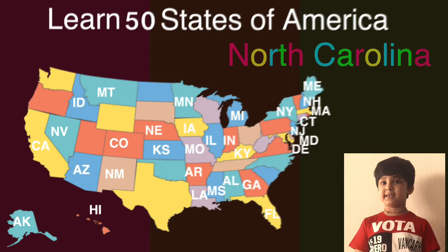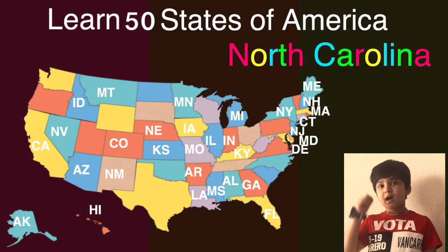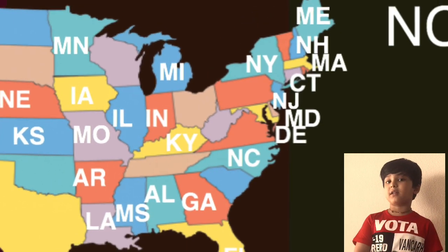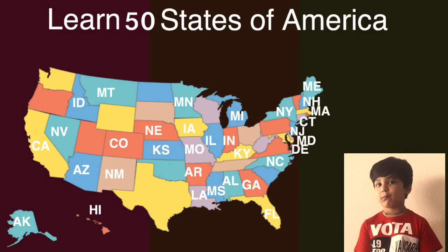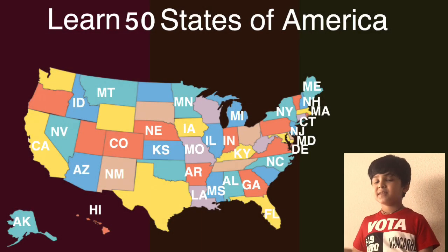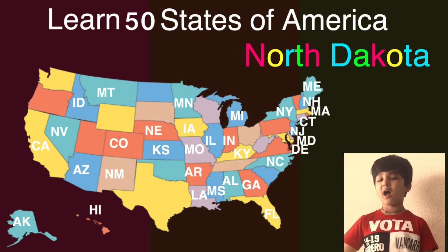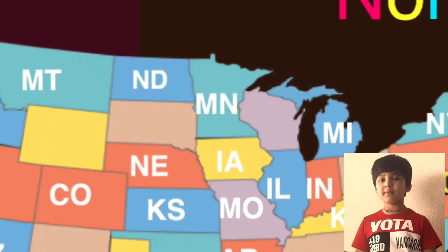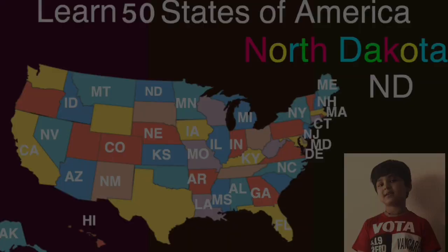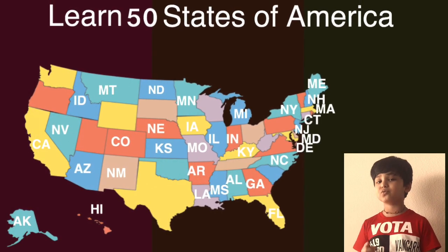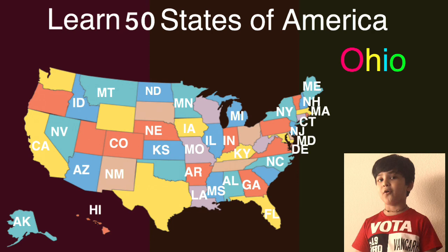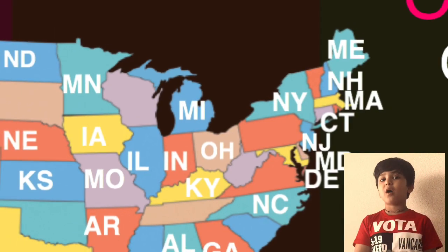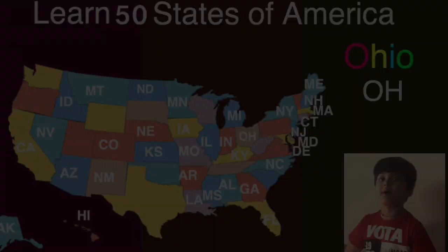The next one is North Carolina and the short one is NC. Here comes North Carolina on the map, can you guess what will come next? The next one is North Dakota and the short one is ND. Here comes North Dakota on the map, can you guess what will come next? The next one is Ohio and the short one is OH. Here comes Ohio on the map, can you guess what will come next?